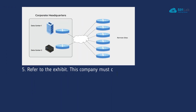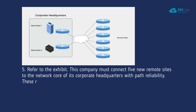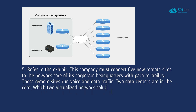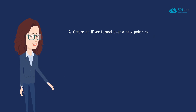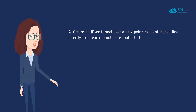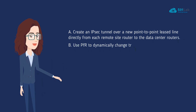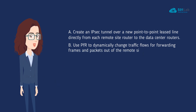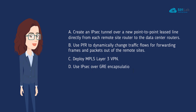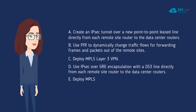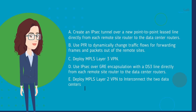Question 5: Refer to the exhibit. This company must connect five new remote sites to the network core of its corporate headquarters with path reliability. These remote sites run voice and data traffic, and two data centers are in the core. Which two virtualized network solutions can achieve the required goal? Choose two. A. Create an IPsec tunnel over a new point-to-point leased line directly from each remote site router to the data center routers. B. Use PfR to dynamically change traffic flows for forwarding frames and packets out of the remote sites. C. Deploy MPLS Layer 3 VPN. D. Use IPsec over GRE encapsulation with a DS3 line directly from each remote site router to the data center routers. E. Deploy MPLS Layer 2 VPN to interconnect the two data centers in the core to the remote sites.